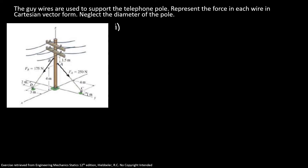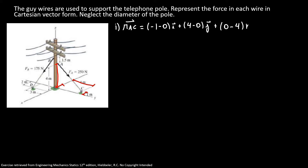I will start with force A. So my position vector A to C is equal to minus 1 minus 0 in the I direction, because this is the distance from x. The distance in y is 4 meters, so plus 4 minus 0 J. And here I have 0 because I'm on the ground, minus a 4 meter height, so 0 minus 4 K. So our position vector RAC is equal to minus 1 I plus 4 J minus 4 K.